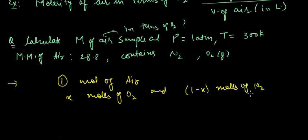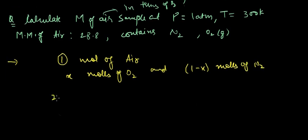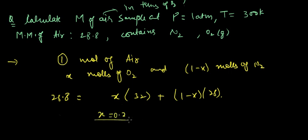Then 28.8, which is the molar mass of air, would be coming from both oxygen and nitrogen. From here, x can be calculated and x would come out to be 0.2 moles. Hence it is 20% oxygen by mole and 80% nitrogen by mole. Hence net moles of oxygen in air is 0.2.